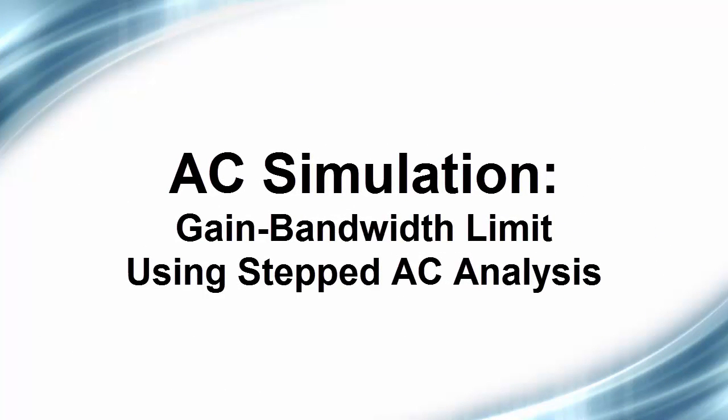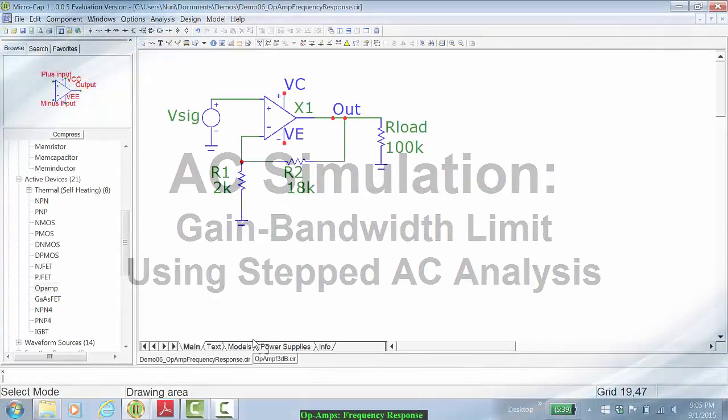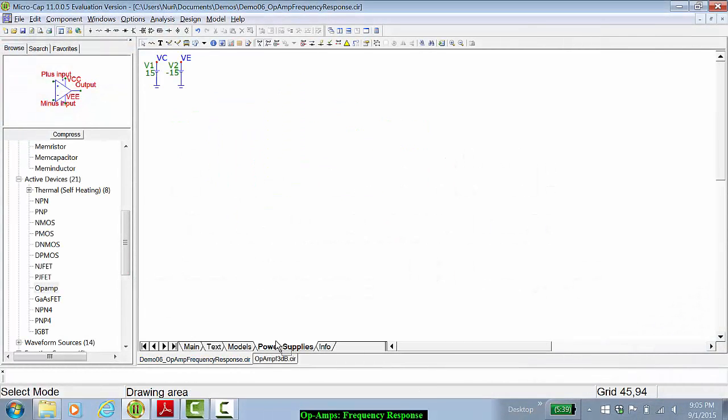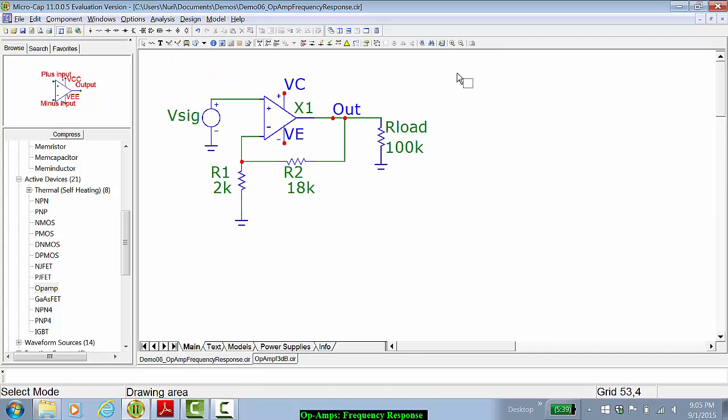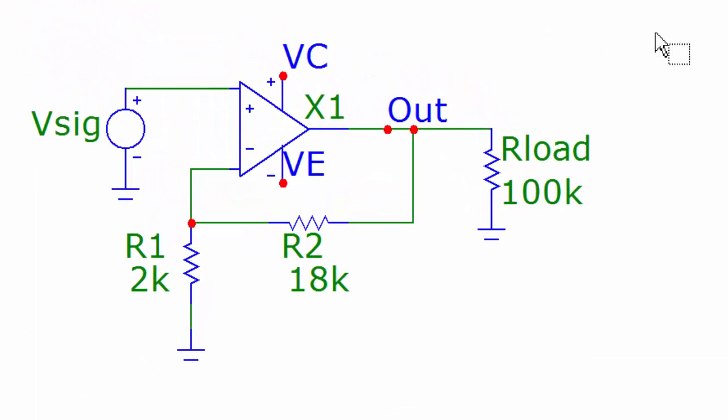We will first demonstrate the 3 dB characteristics of the op amp and how the gain-bandwidth limit affects the output. For this particular simulation, the power supplies are going to be plus and minus 15 volts, and we will set the gain in the non-inverting configuration using R1 of 2k ohms and we will step through R2. We will use a load of 100 kilo ohms and we will look at the gain from V signal to output.